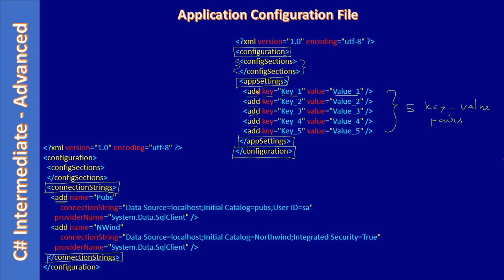Under connection strings, using the add tag we can add a connection string. Since we have two add entries, we have two connection strings in this application setting. The first connection string is named 'pubs', then we specify the connection string value, the provider name — here we are using SQL Client — and similarly for the second entry.